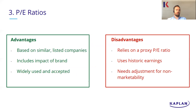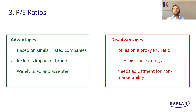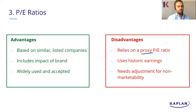The good things about this method: it's based on similar listed companies, so hopefully it gives us a good idea of what our business is worth. It includes the impact of brand and reputation because we're looking at earnings. It is widely used — a lot of people who work in companies and need to value other businesses use this method a lot. It's really quick and gives you a rough indication of the value of the business. However, borrowing someone's PE ratio is a disadvantage — it's unlikely to give us an accurate figure because you're just borrowing from a similar company that does things slightly differently, has a different attitude to risk, different gearing levels. So borrowing a PE ratio — using it as a proxy — is potentially a major disadvantage.